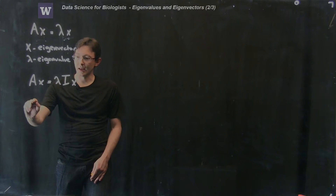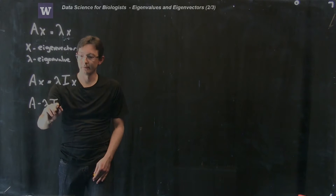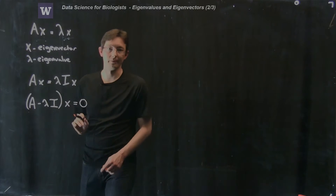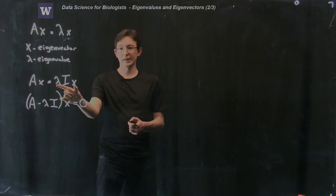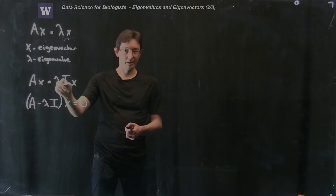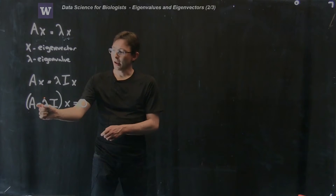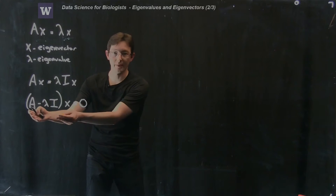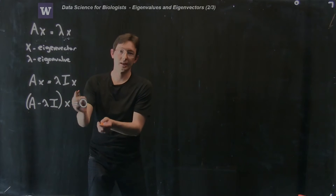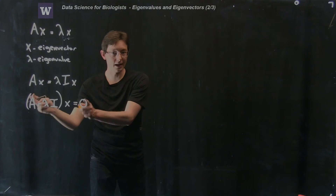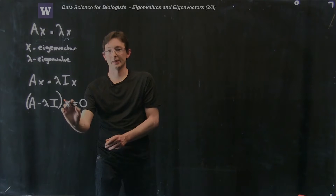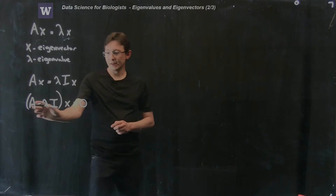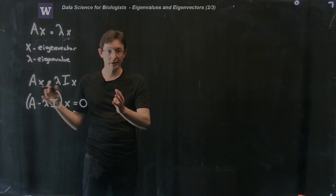I get A minus lambda times the identity, that whole thing times x equals zero. What I did was move this term to the left-hand side: Ax minus lambda I x equals zero. Both A and lambda times the identity multiply x, so I can factor them out — this matrix times x has to equal zero. This is definitely true for the special vectors x and special numbers lambda that are eigenvectors and eigenvalues.